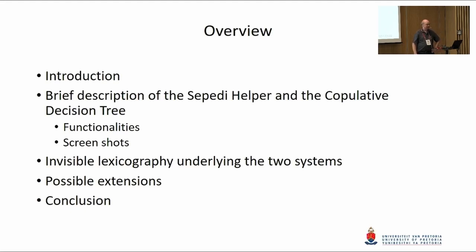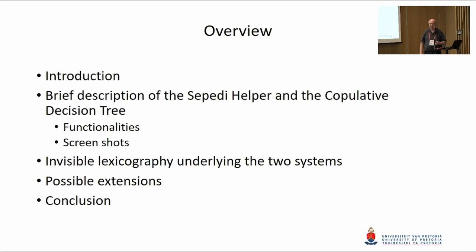What we're talking about today is briefly a description of two writing systems that he has been developing with the help of a number of people. We're looking at the copulative decision tree, its functionalities and a couple of screen captures, the invisible lexicography underlying these systems, how lexicography and rules of lexicography are being used, possible extensions, and then a brief conclusion.